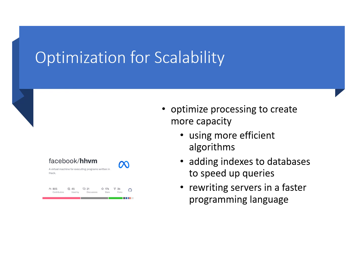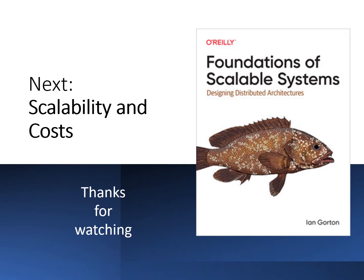I'll revisit these two design principles — namely replication and optimisation — many times in the remainder of this series of videos. You'll see that there are many complex implications of adopting these principles that arise simply from the fact that we are building distributed systems. Distributed systems have properties that make building scalable systems interesting, where interesting in this context has both positive and negative connotations. So, scalability is about increasing the capacity of a system in some application-specific dimension, and we do this through replication and optimisation. In the next video, I'm going to expand this thinking about scalability to include the costs of the systems that we build. Thanks for watching.